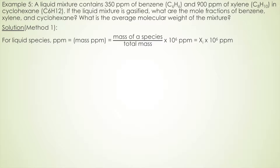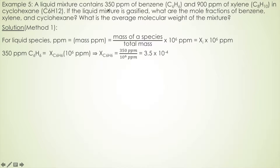For a liquid mixture, ppm refers to mass ppm — that is, the mass of the species divided by the total mass, times 10 to the 6th. Notice that mass of the species divided by the total mass is the mass fraction of the species. Therefore, 350 ppm of benzene equals the mass fraction of benzene times 10^6, giving a mass fraction of benzene equal to 3.5 × 10⁻⁴.